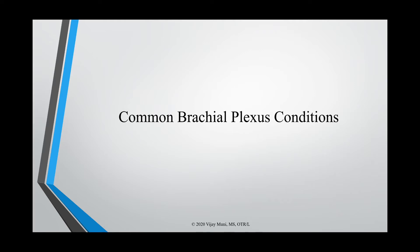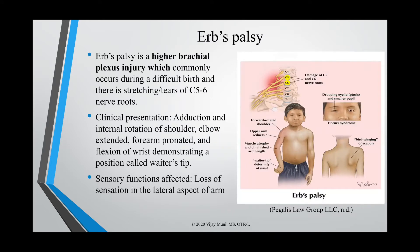We're going to talk about just two conditions: Erb's palsy and Klumpke's palsy. Erb's palsy is a higher brachial plexus injury that commonly occurs through difficult birth, with stretching of the C5 and C6 nerve roots. We see adduction and internal rotation of the shoulder, elbow extension with forearm pronation, and wrist flexion — a position called waiter's tip. There is also loss of sensation in the lateral aspect of the arm.